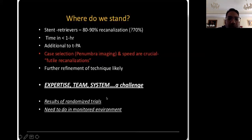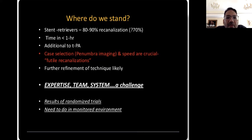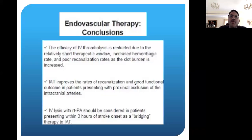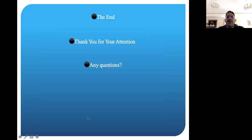Where do we stand now? We use stent retrievers most of the time. If you can get patients within one hour, you'll get the best results. We sometimes still give TPA — intravenously or intra-arterially — but now in lower doses, because we know the more TPA given, the higher the hemorrhage rate. We're giving less TPA, using lower doses of heparin, and by decreasing the anticoagulants we're seeing a lower rate of intracranial hemorrhage. In conclusion: IV thrombolysis, while good, doesn't always work well if the clot burden is high. Intra-arterial works better, especially mechanical intra-arterial thrombolysis, and sometimes bridging therapy — intravenous followed by intra-arterial as definitive therapy — can be used.